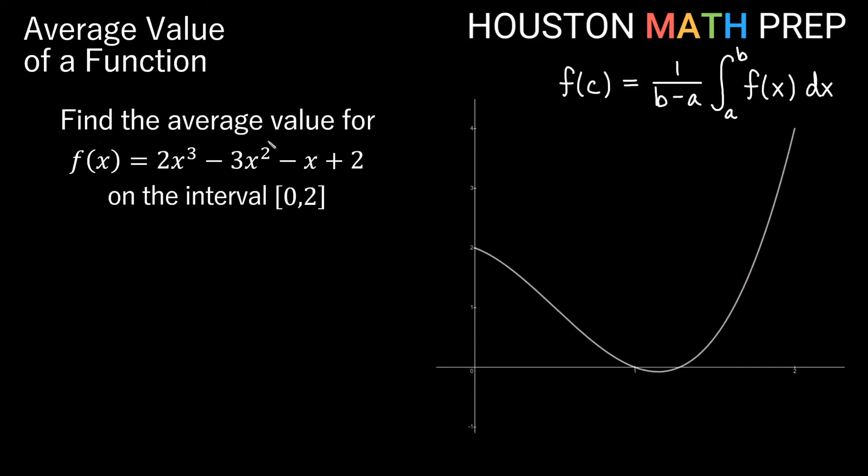Let's look at an example here. We want to find the average value for this function that I've got, 2x³ - 3x² - x + 2, and we want to find the average value on the interval [0,2]. So we're curving down, then we bend back upward, and then we increase up to this point here. It's really hard to tell by looking at it what is the average value on this interval, so we're going to use our formula to do that.